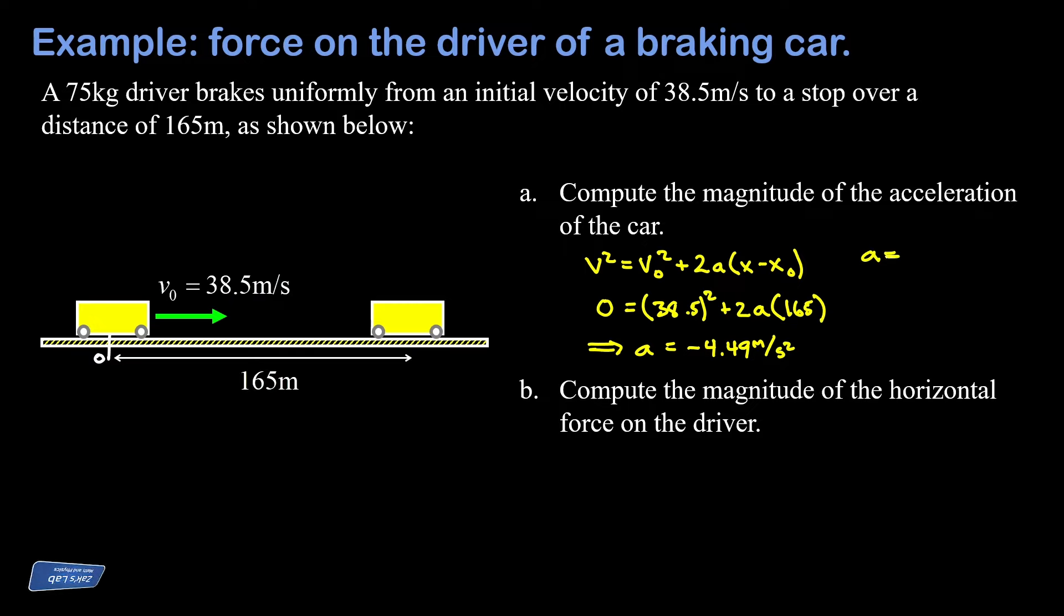So the size of this vector is just 4.49 meters per second squared. Next, we want to get the magnitude of the horizontal force on the driver, and we know that if the acceleration of the car is 4.49 meters per second squared, that's the same as the acceleration of the actual human being inside the car.